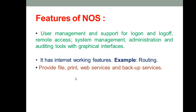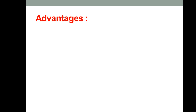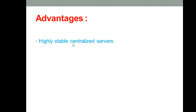The network operating system also provides file, print, web services, and backup services. It supports internetworking such as routing, allowing you to perform different applications and web services. Based on these features, we can derive the advantages and disadvantages. One key advantage is that it has a highly stable, centralized server providing all kinds of services to connected client operating systems.